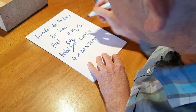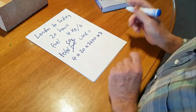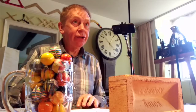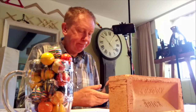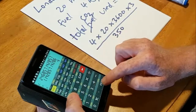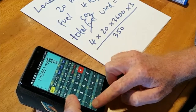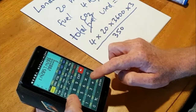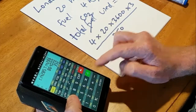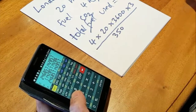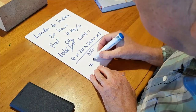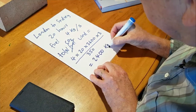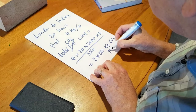So the total amount of CO2 that gets emitted, divided by the number of passengers — 4 multiplied by 20 multiplied by 3600 multiplied by 3 divided by 350 — gives 2,400 kilograms. That's per person.